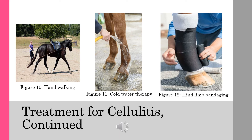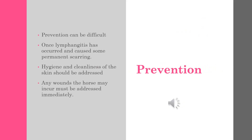Featured on screen are some examples of care that can be given to an animal with cellulitis. Figure 10 shows an individual hand walking the horse to promote circulation. Figure 11 is cold water therapy, and Figure 12 is showing some hind limb bandaging.